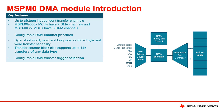The DMA transfer trigger selection is configurable, typically software trigger, subscriber trigger, and publisher trigger. Both subscriber and publisher events are generated by the events management module on a per-peripheral basis.